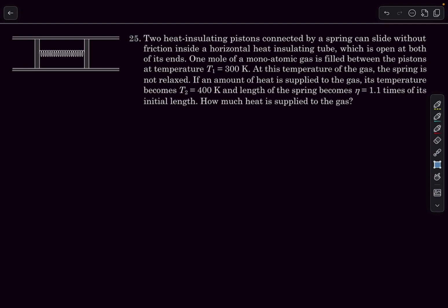Welcome back everyone. Today's problem is check your understanding question 25 from the thermal physics chapter. We have two heat-insulating pistons connected by a spring that can slide without friction inside a horizontal heat-insulating tube which is open at both ends. The pistons and the tube are heat insulating, which means no heat can either enter or escape to or from the surroundings.